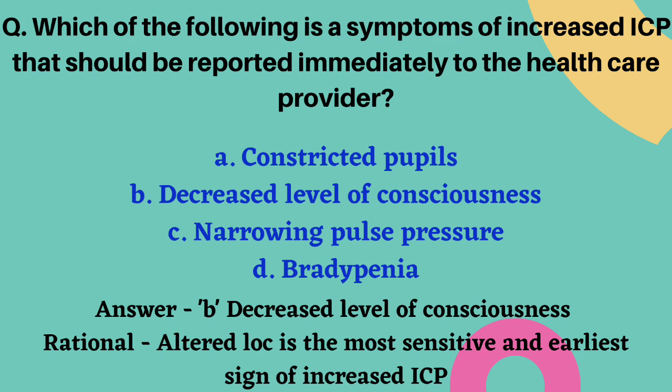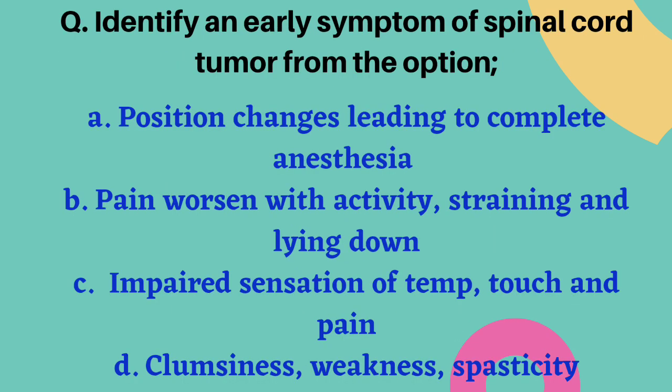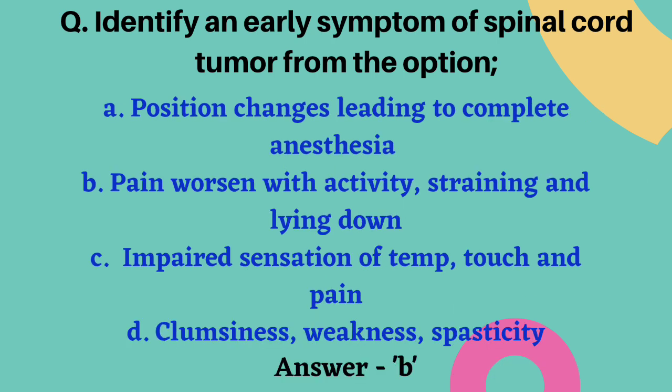The next question: identify an early symptom of spinal cord tumor. Options are position changes leading to complete anesthesia, pain worsened with activity, straining and lying down, impaired sensation of temperature, touch and pain, and clumsiness, weakness and spasticity. The correct answer is option B — pain worsened with activity, straining and lying down.